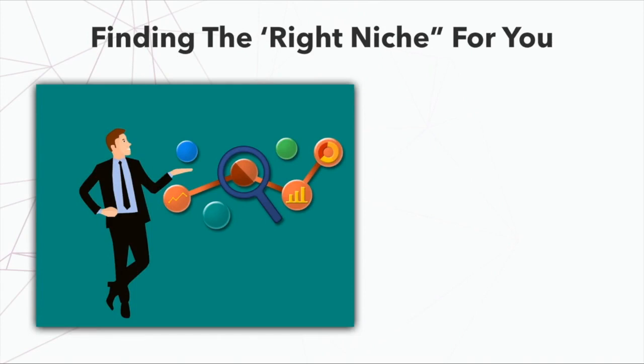Now, finding the right niche for you. Here are a few different categories you can look into if you're having a hard time. Passion is one of the major components of finding a good niche. If you're passionate about paintball, sell paintball items. If you're passionate about dogs, go into the dog niche. If you're passionate about electronics, go into the electronics niche. People tell you to only go into a niche you know is profitable, but that's wrong — every niche is profitable.